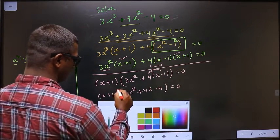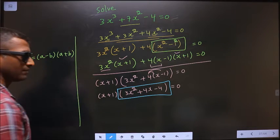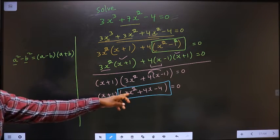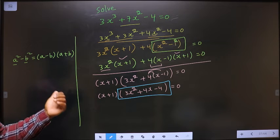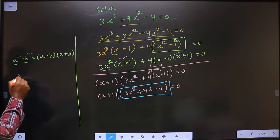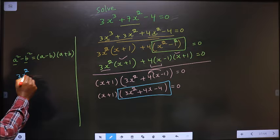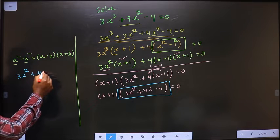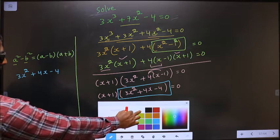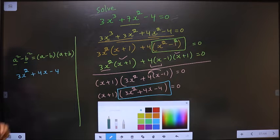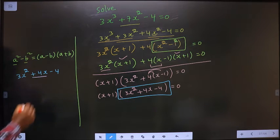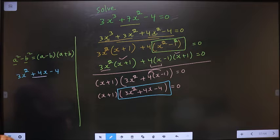Now, this is a quadratic. So I will factorize this quadratic equation here. It is 3x² + 4x - 4. To factorize this quadratic, I have to change the middle term, that is 4x.